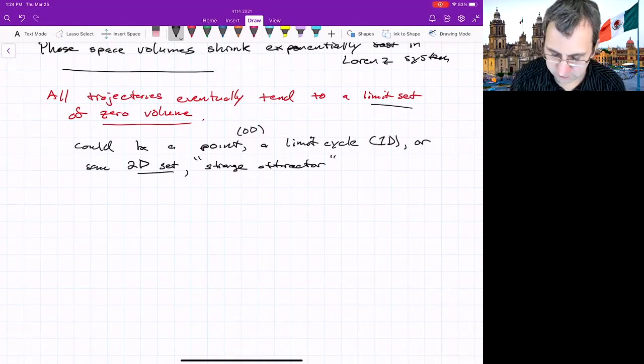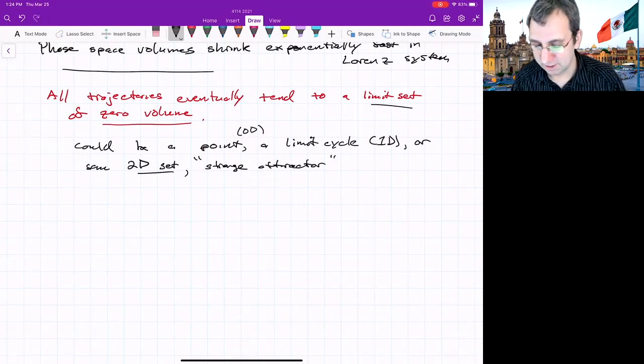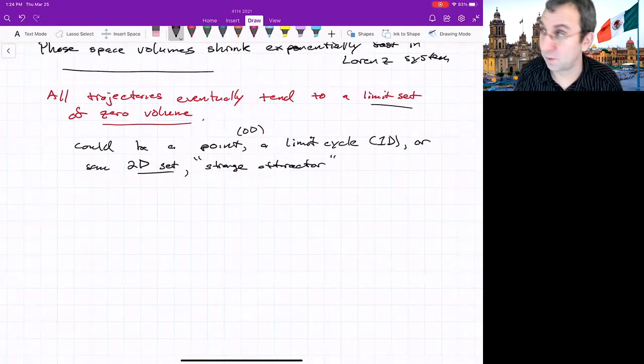We did these two properties: symmetry, which sort of leads to the possibility of a pitchfork bifurcation, and then this thing about dissipation. We didn't do what we have typically done when we study 2D systems, which is look at the fixed points and analyze the linear stability of the fixed points. Maybe we should go back and do that.